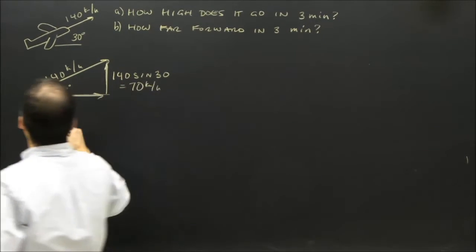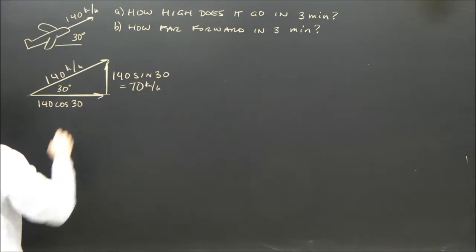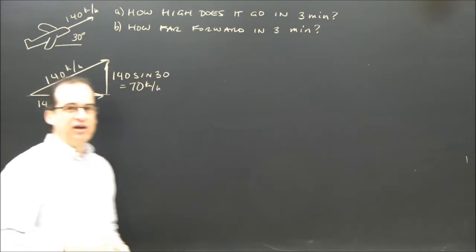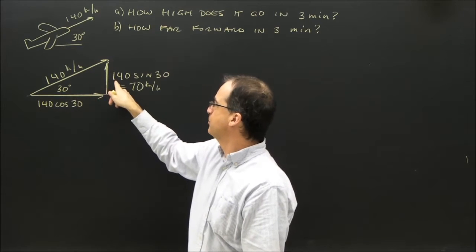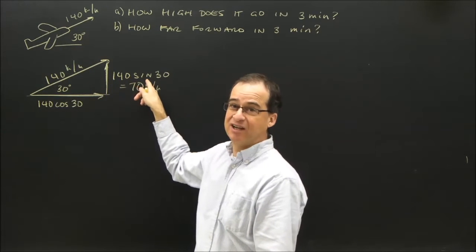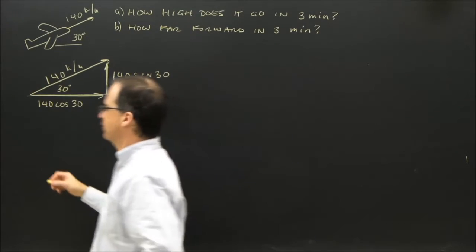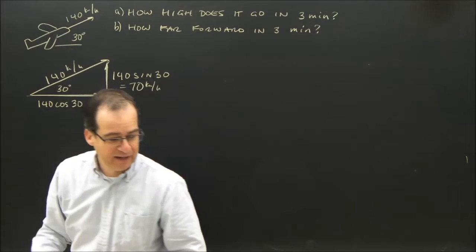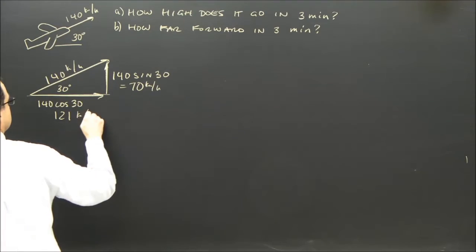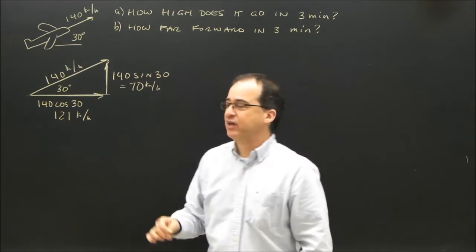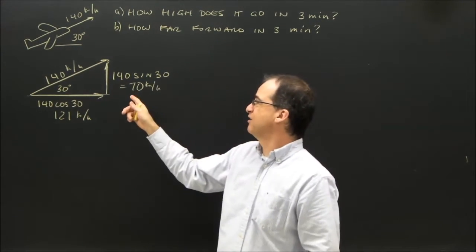The horizontal side is 140 cosine 30, because as you've learned in the vector videos, when you have a vector and an angle, the opposite side is the sine side and the adjacent side is the cosine. 140 cos 30 is 121. So while this plane is moving, it's moving forward at 121 kilometers per hour and up at 70.